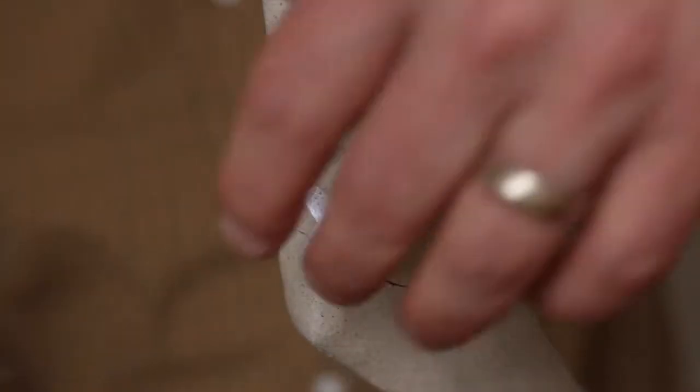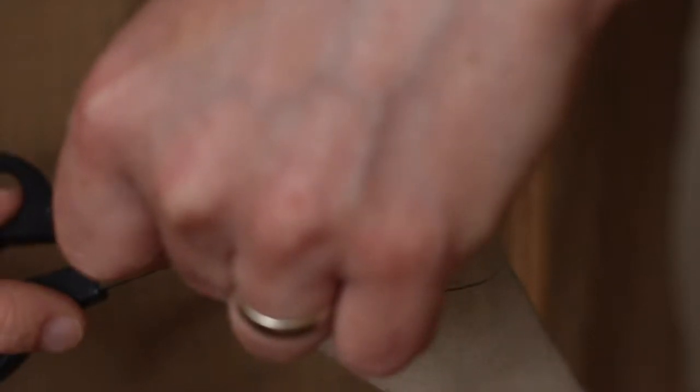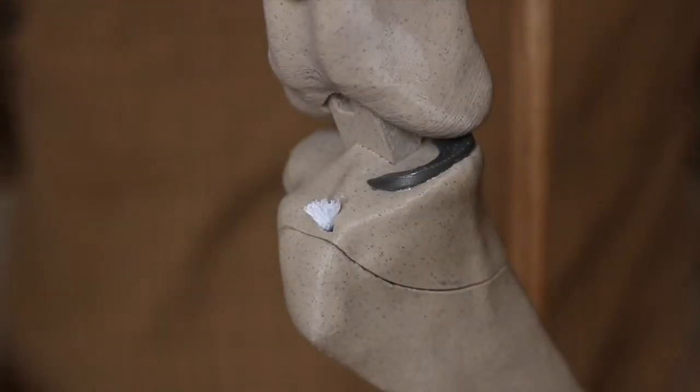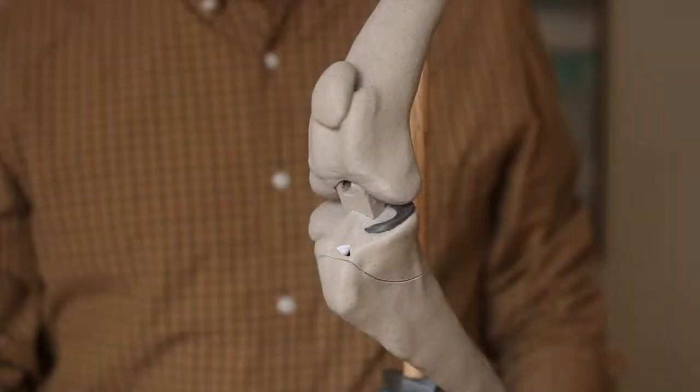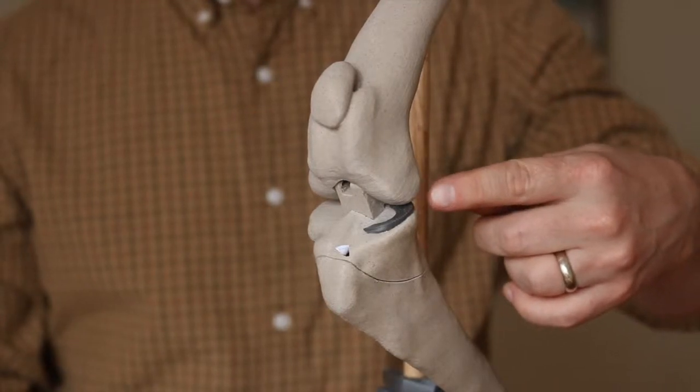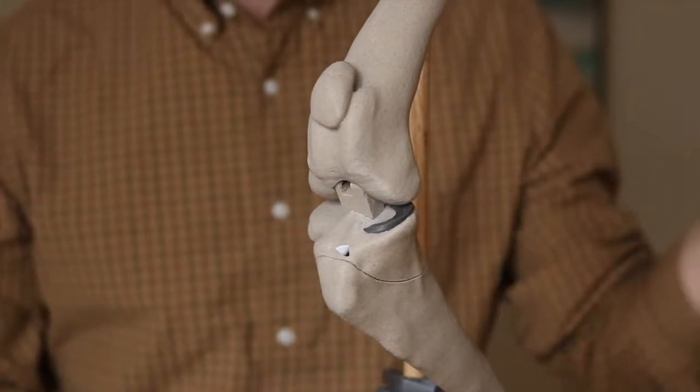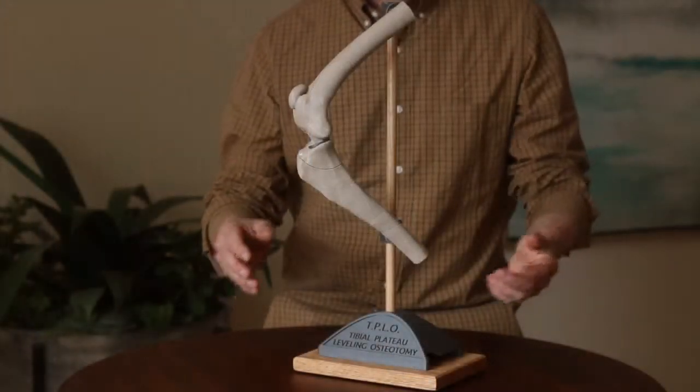In surgery we remove the remnants of the cranial cruciate ligament, and then we also take a very close look in surgery at the medial meniscus to see if there's any damage there. And if there is tearing of that back end of it, you remove that portion, that damaged portion.